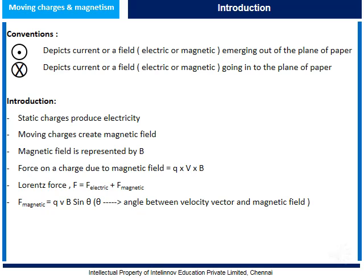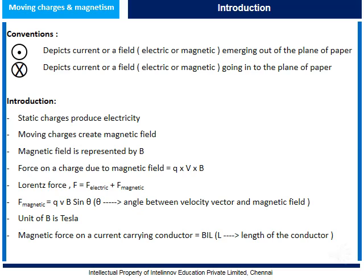The unit of magnetic field is Tesla. Magnetic force on a current-carrying conductor is given by B times I times L, where B stands for magnetic field, I stands for current, and L stands for the length of the conductor.